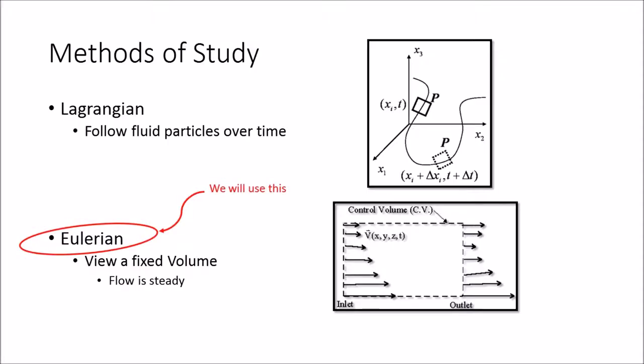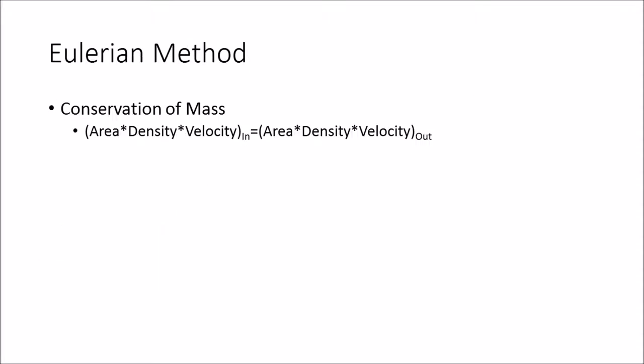The control volume has an inlet and an outlet, and you measure the parameters of the fluid at the inlet and at the outlet. This method requires an assumption of steady flow. Steady flow requires the conservation of mass. In our case, that means the area of the inlet multiplied by the density and velocity of the fluid at the inlet must equal the area of the outlet multiplied by the density and velocity of the fluid at the outlet.